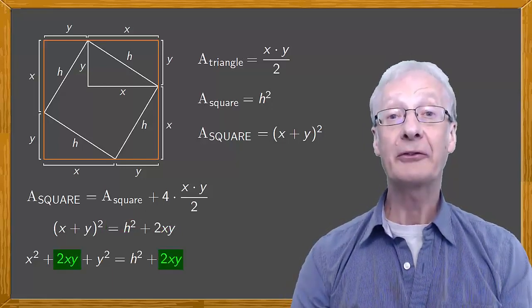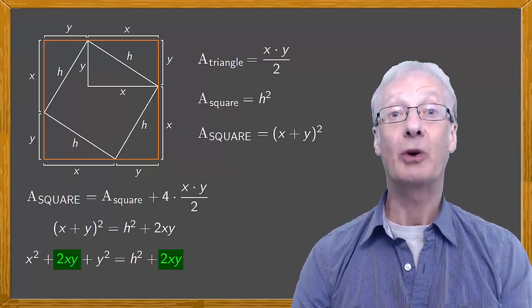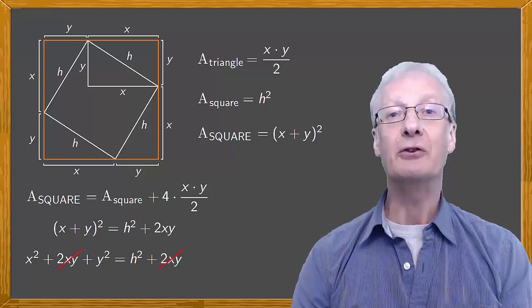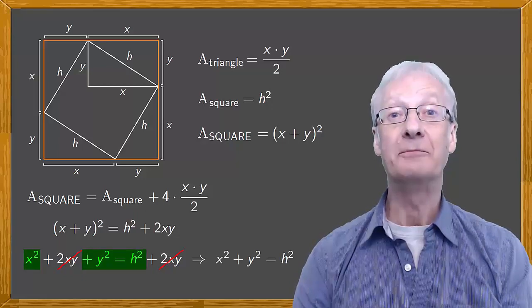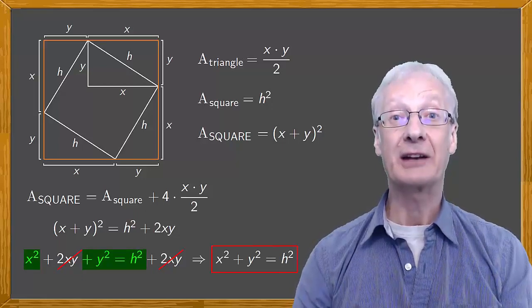The 2xy on the left side cancels with the 2xy on the right, so we're left with x squared plus y squared equals h squared. And this is the Pythagoras theorem.